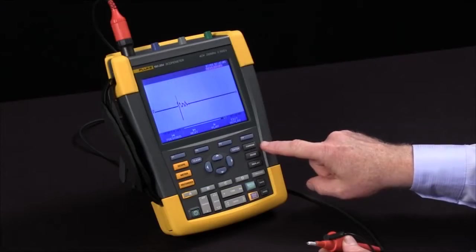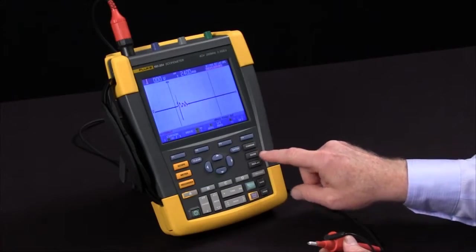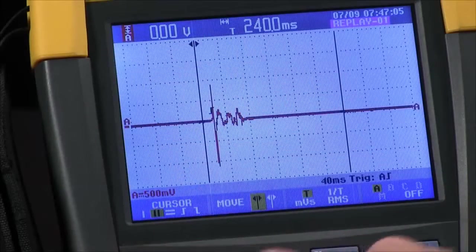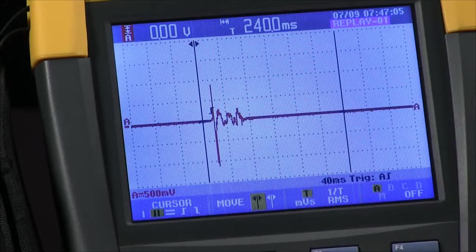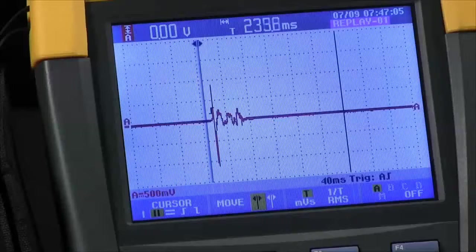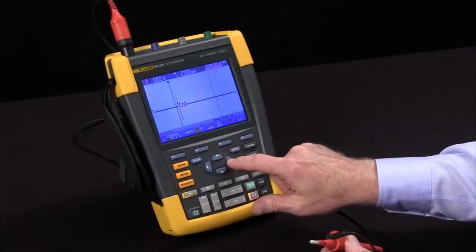Then we can turn on our cursors. We have two cursors initially that are set up to measure delta time and delta volts. You've got your voltage up here and your time up here. The first cursor with the arrows I'll move to the start of the waveform.